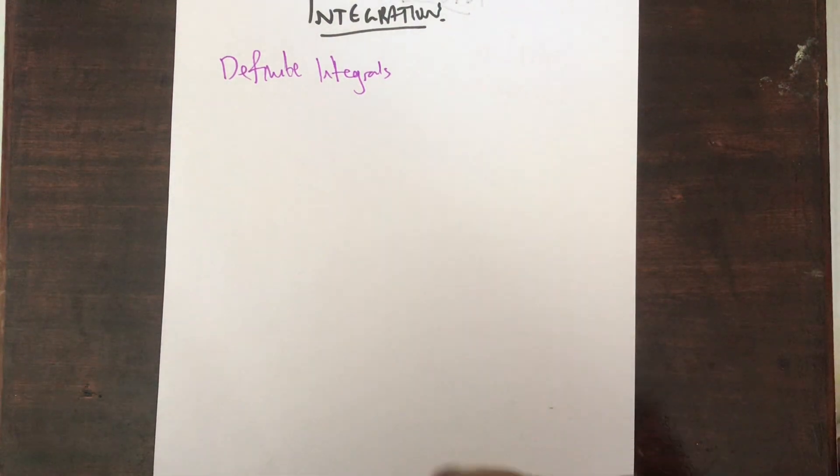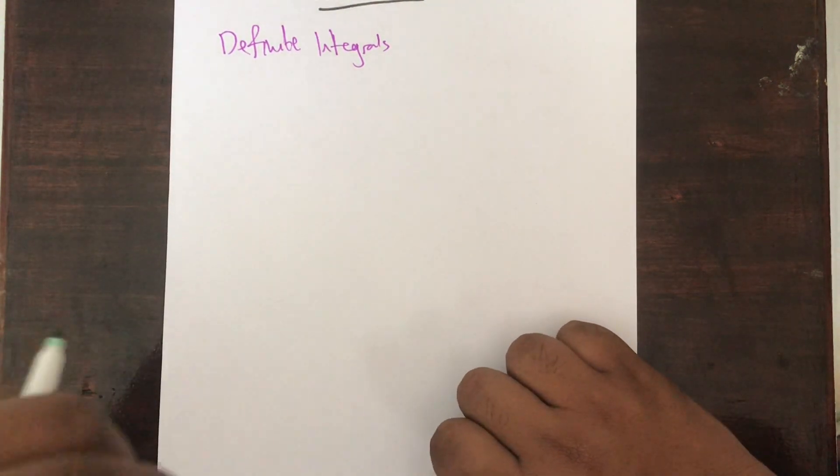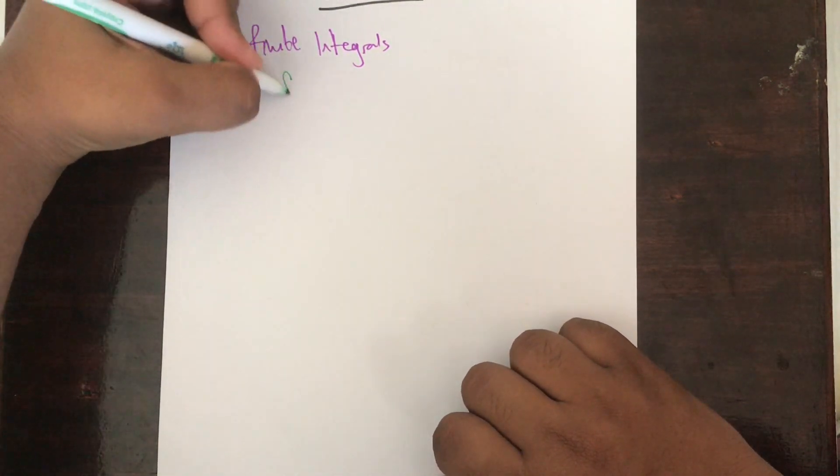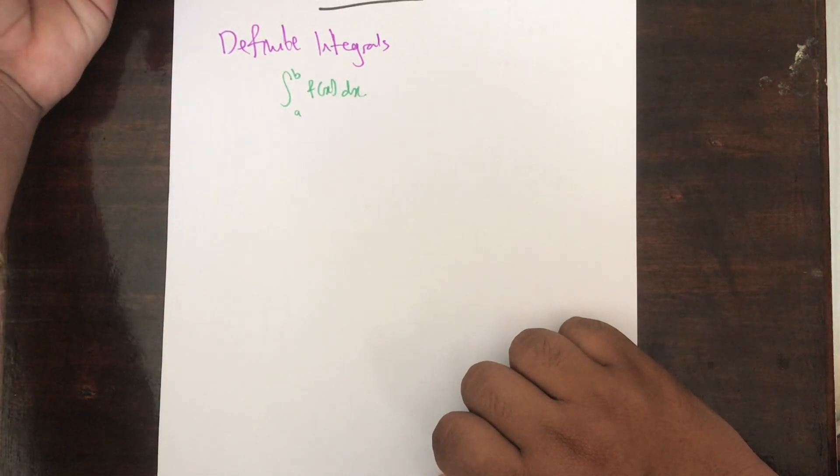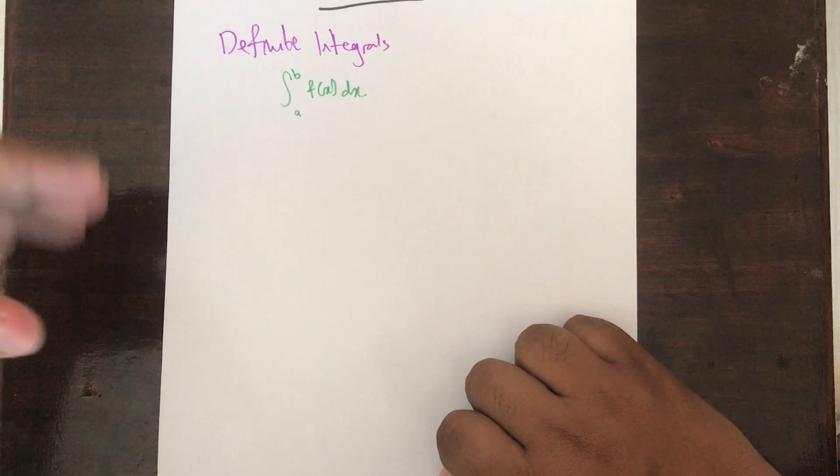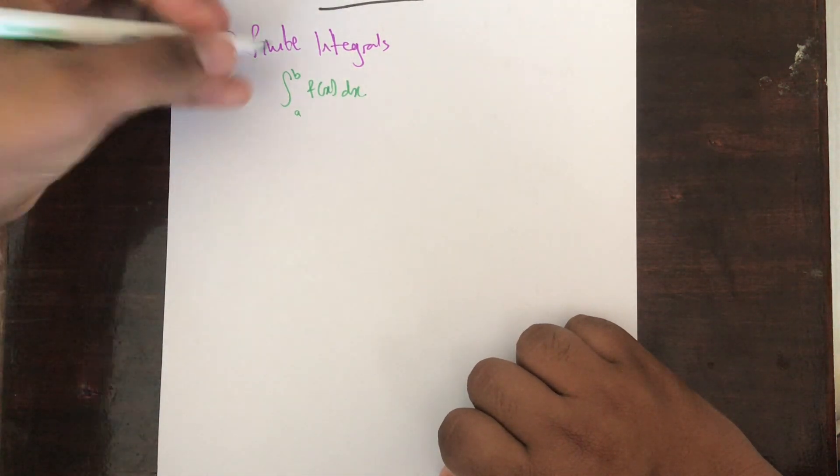Now we look at definite integrals. In all the previous videos we were dealing with indefinite integrals. For a definite integral you need to make sure you have limits. This is how the format of a definite integral looks like. It's very similar to the normal indefinite integral which we're used to, but this one has limits.